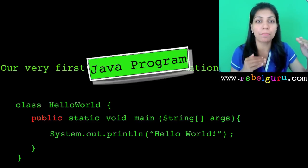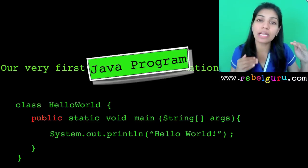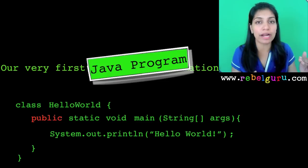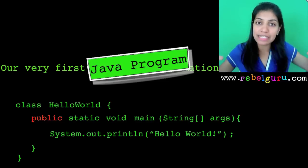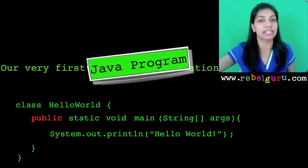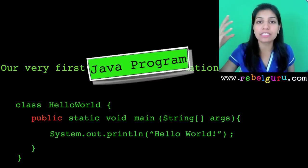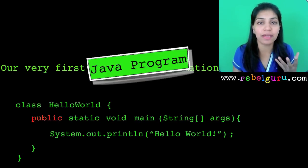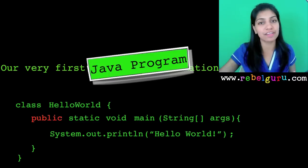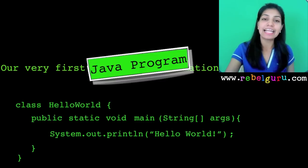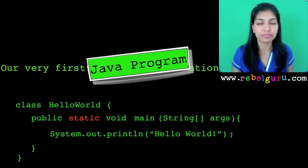When you make something public, every code — both outside and inside the class — can access that member. When you make a member private, only members of the class can access it. When you run the program, the JVM (Java Virtual Machine) looks for the main method and starts executing its lines. The JVM is something outside the class, so to allow it to access the main method, the main must be made public — which is why main is public.